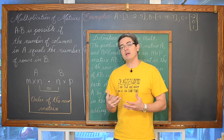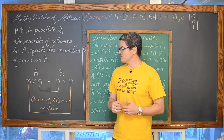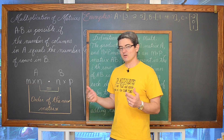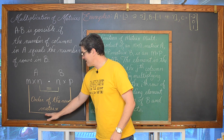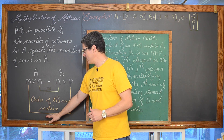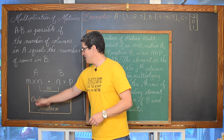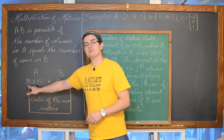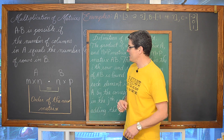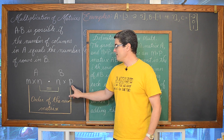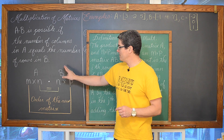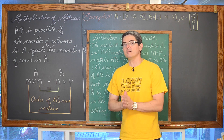When you get done multiplying these two matrices together, that new matrix, the product, is going to have the order which is equal to the number of rows in A, that first matrix in your multiplication, by the number of columns in B, that second matrix.